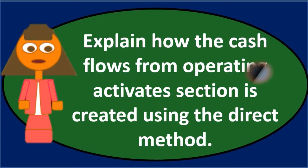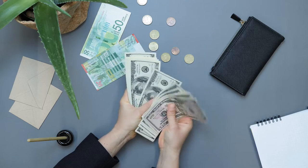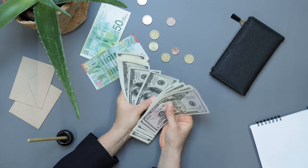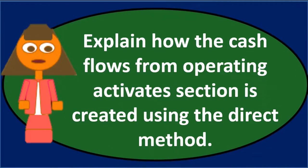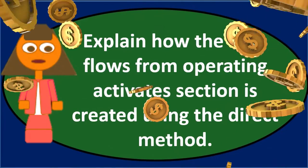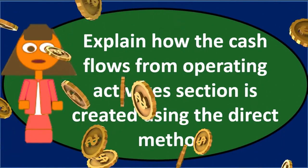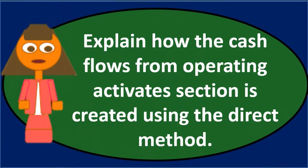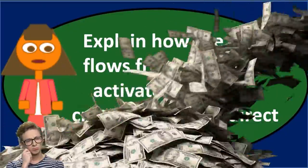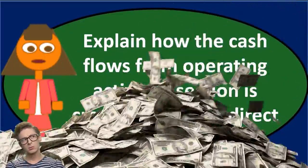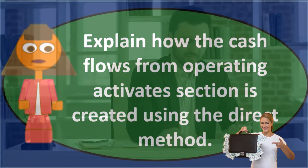The operating section is the one we want to spend most of our time on because it's the main category. You can think of it as similar to the income statement. The balance sheet represents a point in time; the income statement tells us the story of activity happening. The statement of cash flows does the same, but uses a different basis — the income statement uses accrual principles (revenue recognition and matching) to tell us when activities happened.